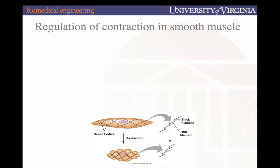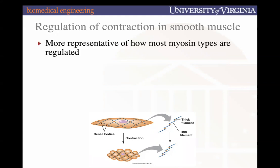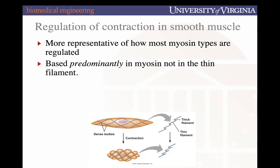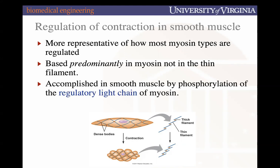Switching to the regulation of contraction in non-striated muscle, in this case smooth muscle. This is more representative of how most myosin types are regulated. Up to this point, everything has been on striated muscle — primarily myosin type II and myosin type V. The regulation we'll discuss now is characteristic of other myosin species and is primarily at the myosin level, accomplished by phosphorylation of the regulatory light chain.